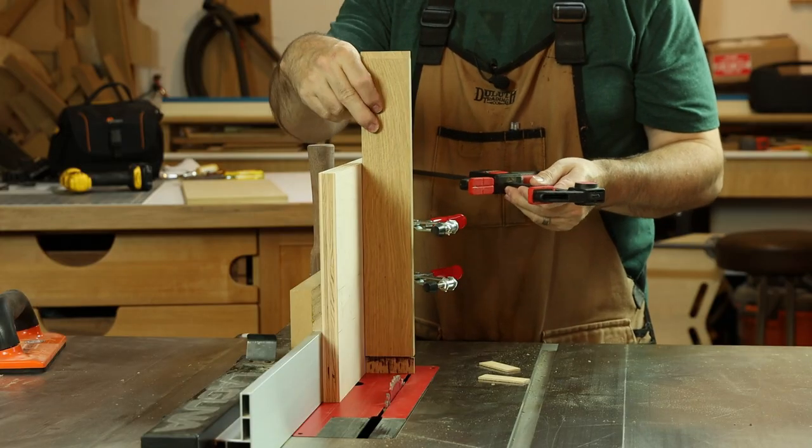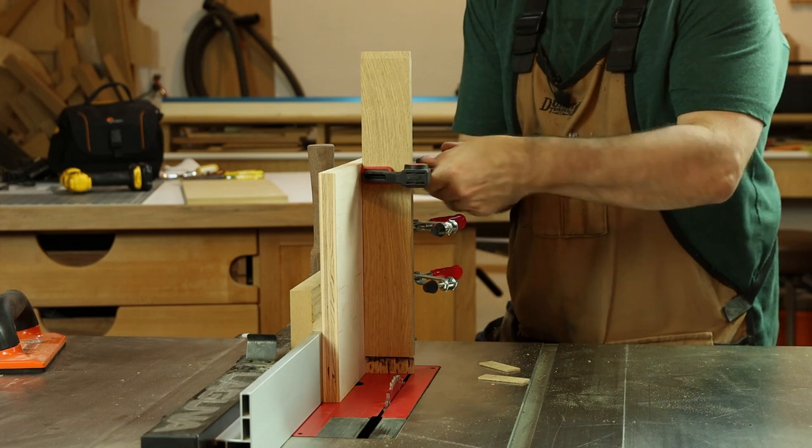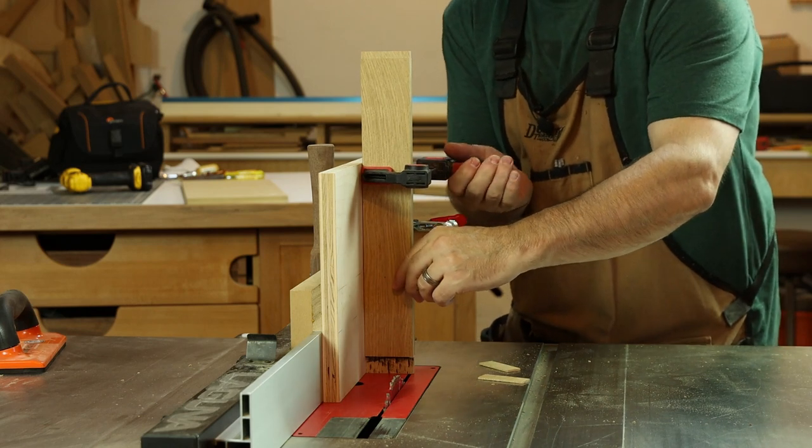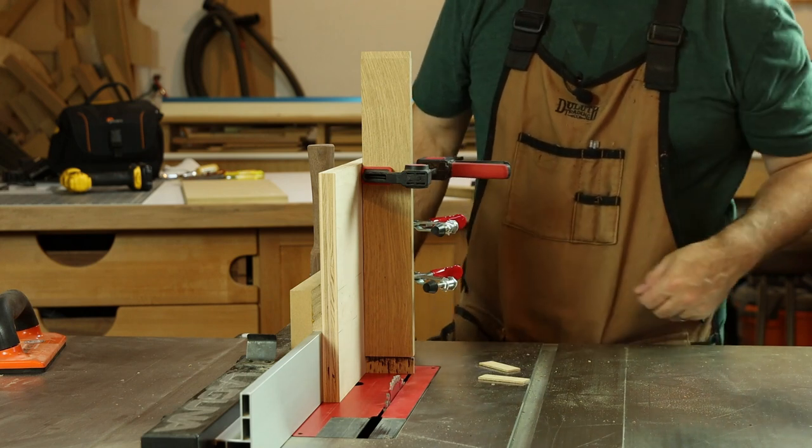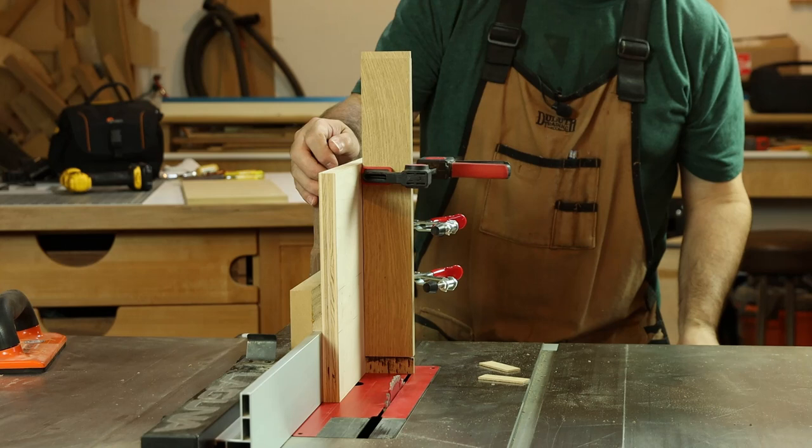And if you don't mind installing a quick clamp you can actually take care of the side shoulder cuts as well. Just make another adjustment on the rip fence so the waist piece again falls to the free side of the blade and we'll make those two cuts.